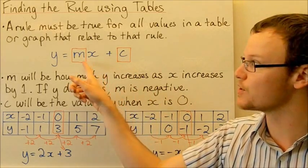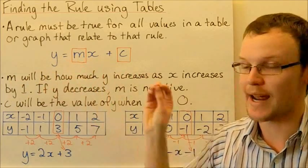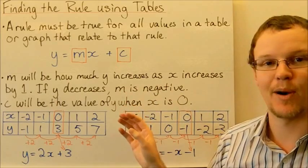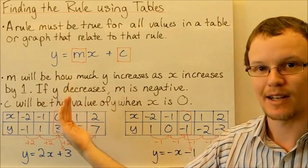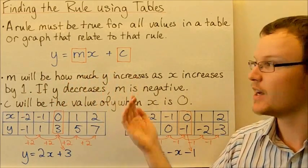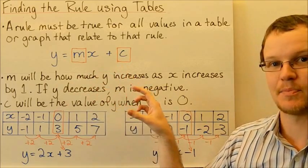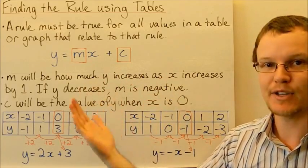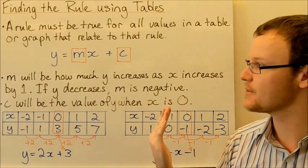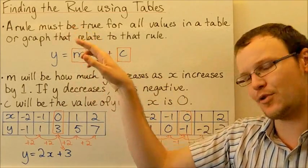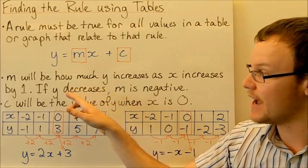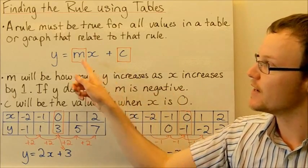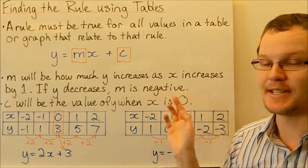So how do we find each of those? Well, firstly looking at m: m is the amount that y increases as x increases by 1. So as x gets larger by 1, the amount that y increases will be m. If y decreases as x increases — if y gets smaller as x gets bigger — then m will be negative.